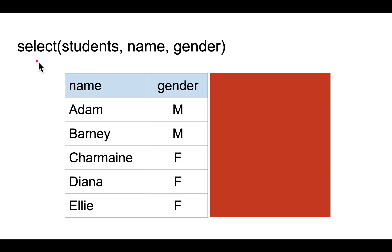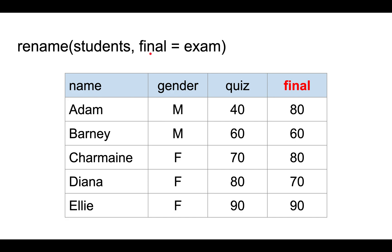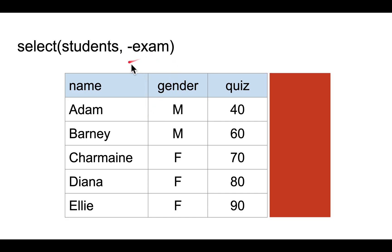If you use the select function, it allows you to select only some of the columns of the data frame. So if you only want to keep the name and gender columns, then you just list them out explicitly. The other two columns are not selected, they're deleted. Alternatively, you can use the hyphen to deselect columns. So if you want to delete the exam column, you write minus exam, and all the other columns that are not deleted are kept.